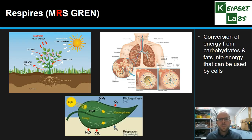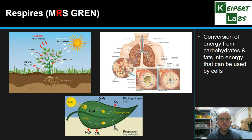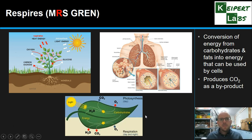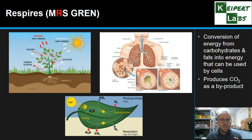Respires — that's the first R in Mrs. Green. Respiration is the process of converting energy from carbohydrates and fats into energy that can be used by cells, allowing the cell to get the energy that powers it. It's a chemical reaction, and it produces carbon dioxide as a byproduct. The living thing needs a way to get rid of that carbon dioxide. In plants, oxygen and carbon dioxide go in and out through the leaves via little holes on the underside called stomata — depending on whether we're talking about respiration or photosynthesis. For human beings, we breathe in oxygen through our lungs and breathe out the carbon dioxide that gets made.